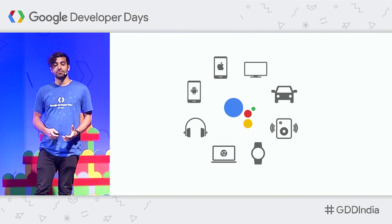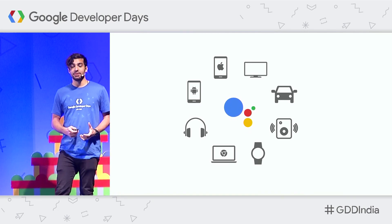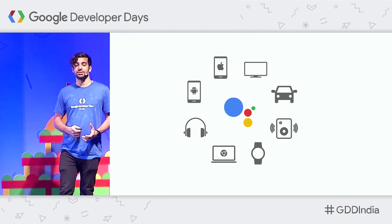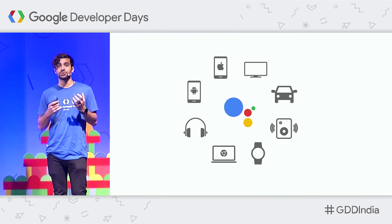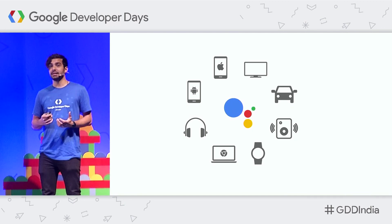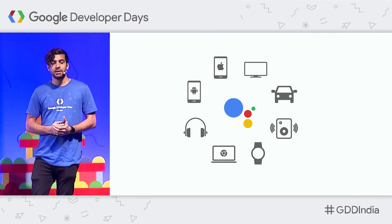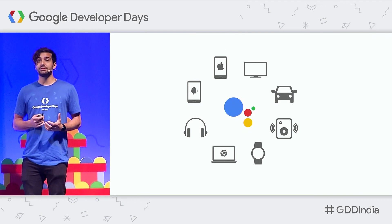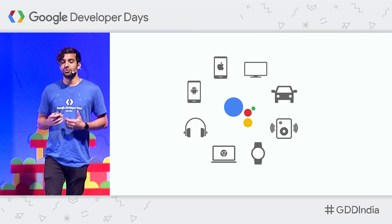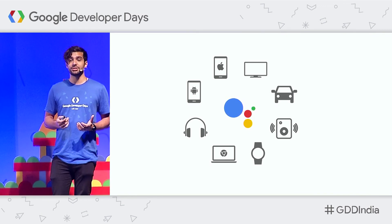At Google, we believe the future is AI first. And we've been investing heavily in the areas of machine learning, speech recognition, and language understanding. So these things all come together in the Google Assistant, and it basically allows you to have a conversation with Google that helps you get things done. Because of these investments in AI, the conversation can be completely natural. You just use your voice, ask in a natural way, and the Assistant will help you.